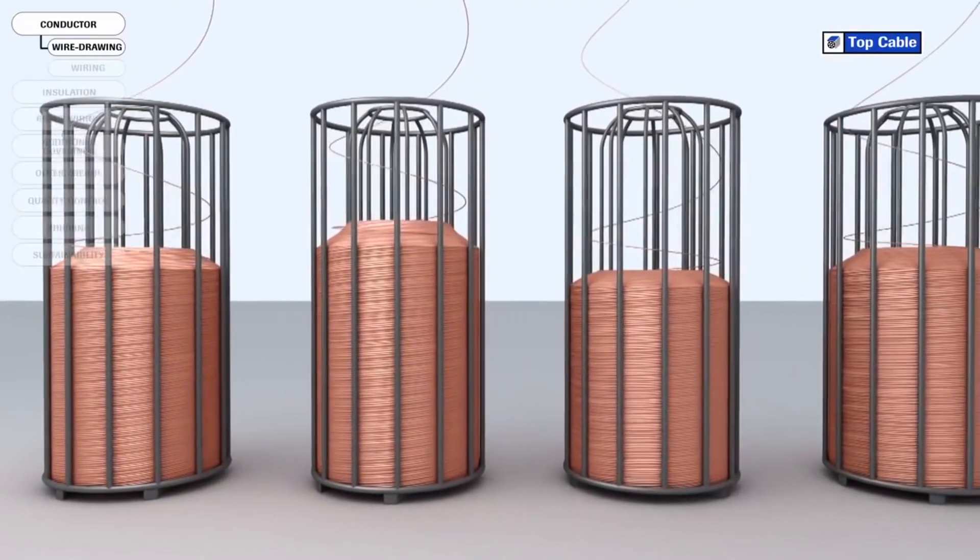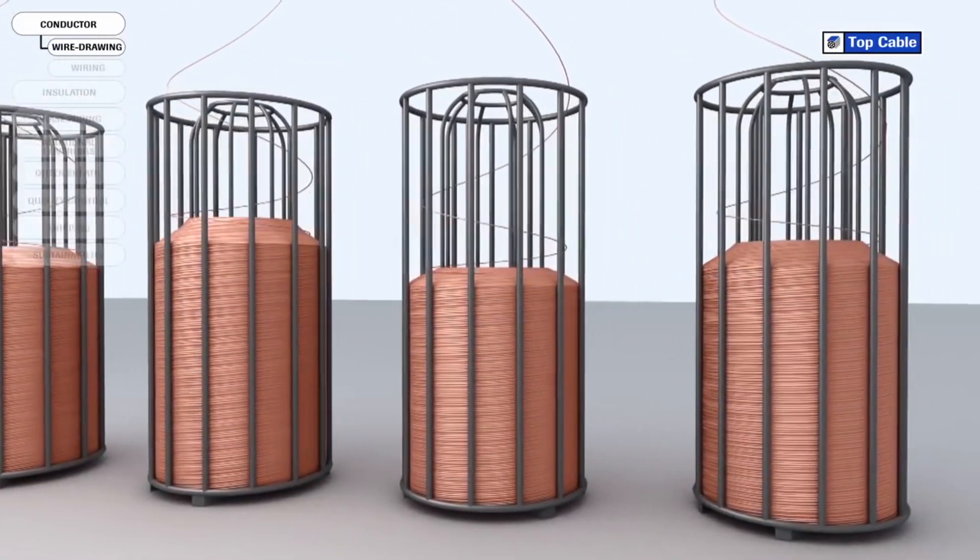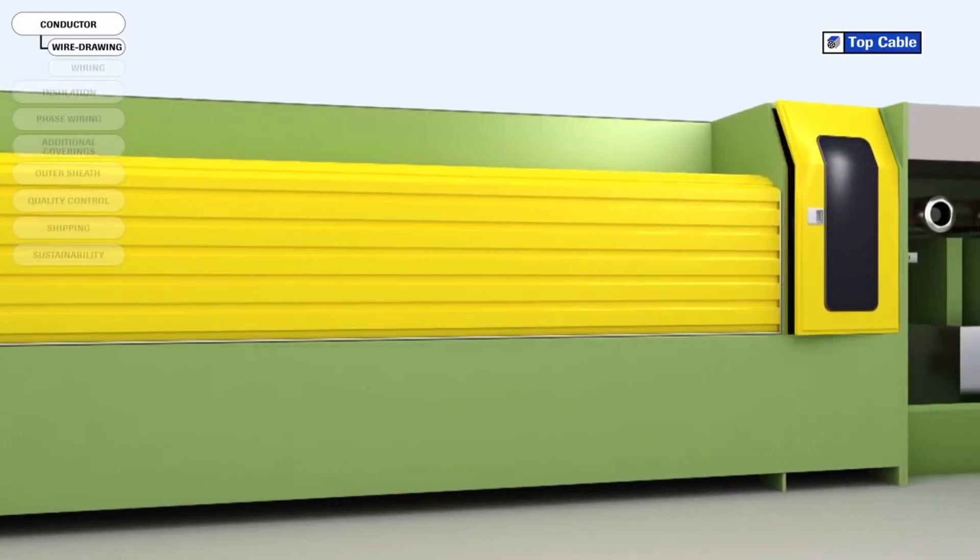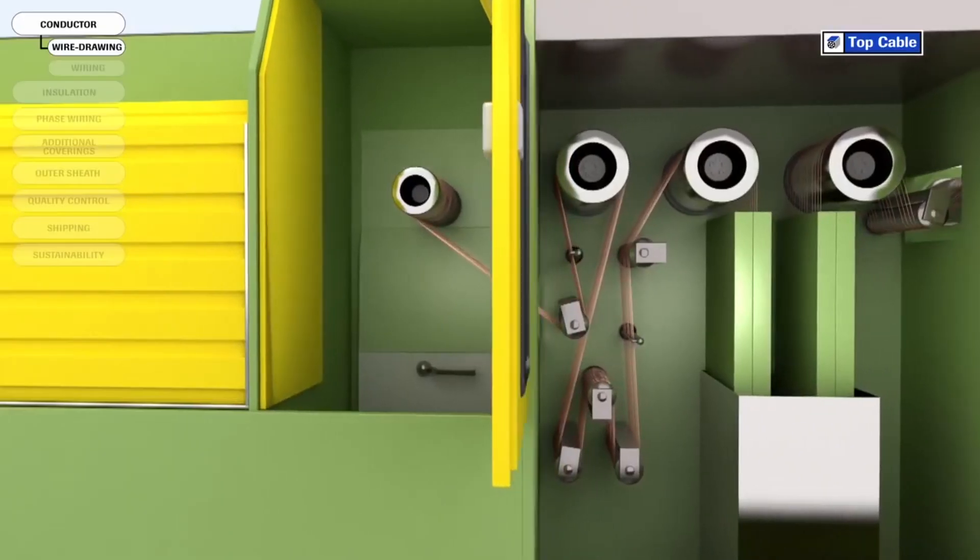In the last stage of wire drawing, all the wires undergo a heat treatment called annealing. The aim of this stage is to increase the ductility and conductivity of the copper.